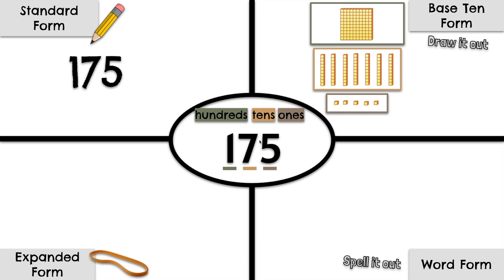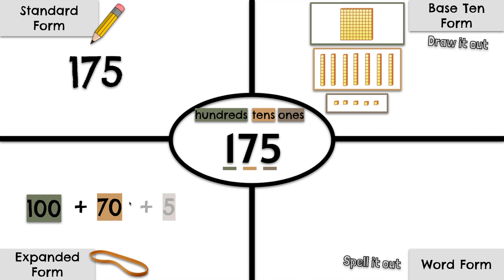Let's show this number in expanded form. We will stretch it out by place value. We have 1 in the 100's place which makes 100. We have a 7 in the 10's place which makes 70. We have a 5 in the 1's place which makes 5. 100 plus 70 plus 5 makes 175.